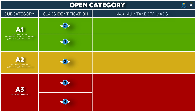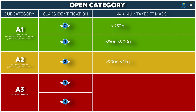The class identification of your drone depends on its weight — specifically its maximum takeoff mass. C0 drones are below 250 grams; C1 drones are above 250 grams but below 900 grams; C2 drones are above 900 grams but below 4 kg; and C3 and C4 drones are above 4 kg but below 25 kg. C3 and C4 share the same maximum takeoff mass range, but the classification depends on the size of the drone.